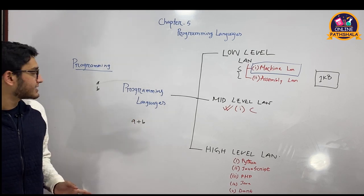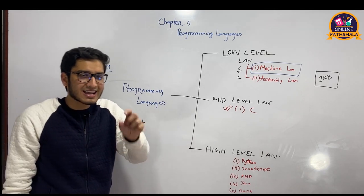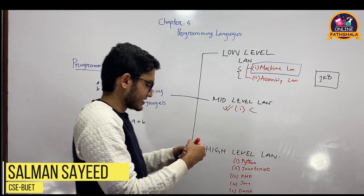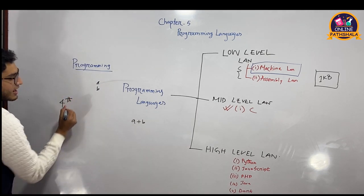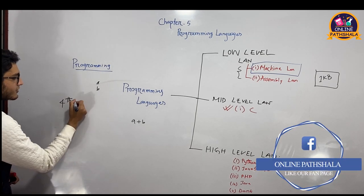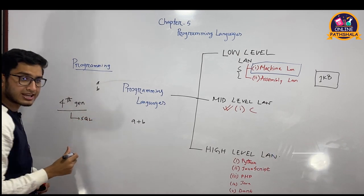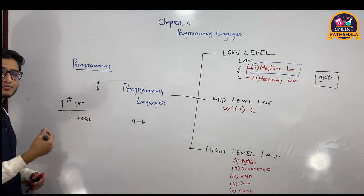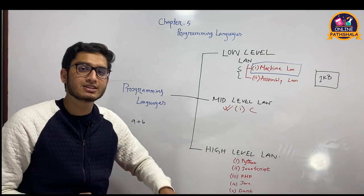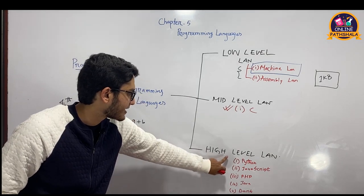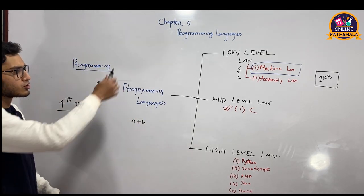What are we doing in today's lecture? We are discussing programming languages. There is also a category called the fourth generation language. The fourth generation language is an extension of high level language — it is a big extension. Similarly, the third generation language refers to low, mid, and high level languages combined. So overall, high level language is also referred to as third generation, and fourth generation is an even higher extension of that.